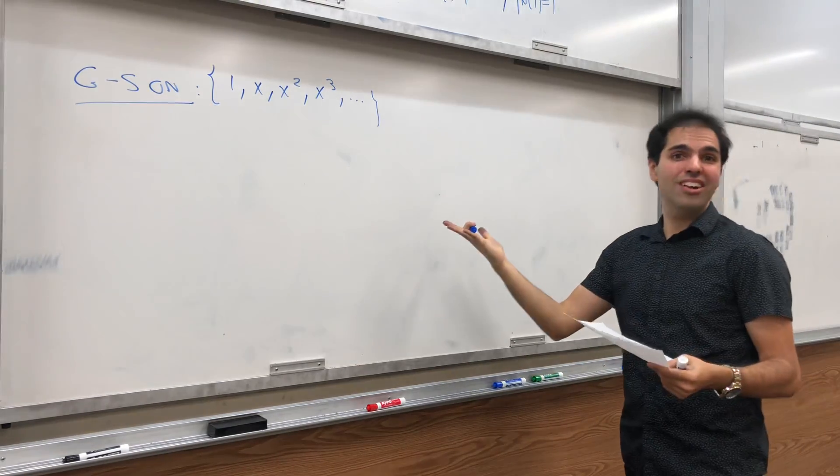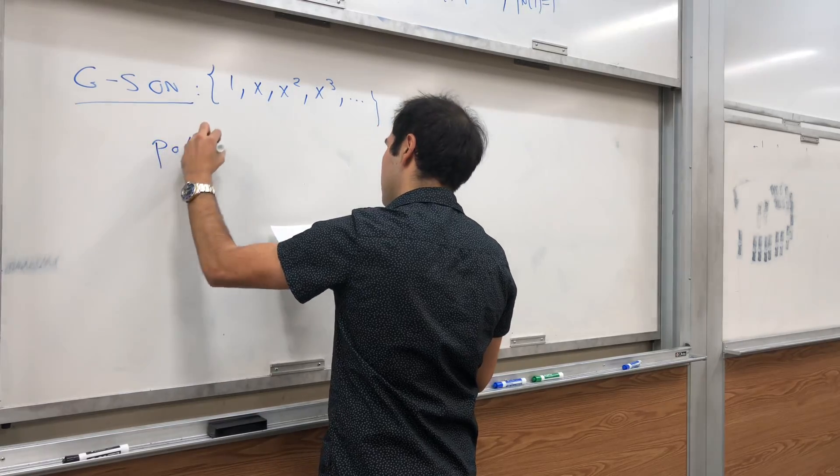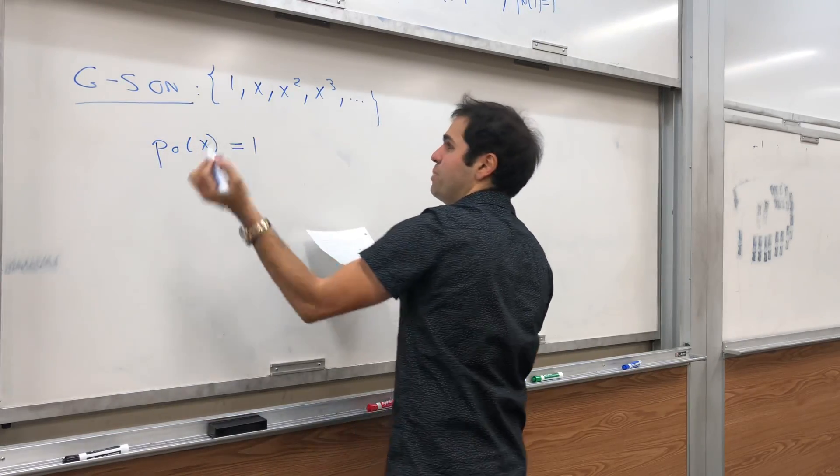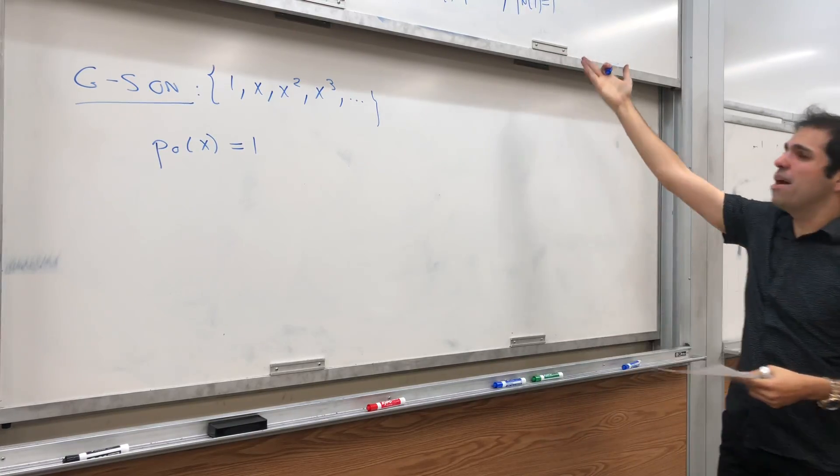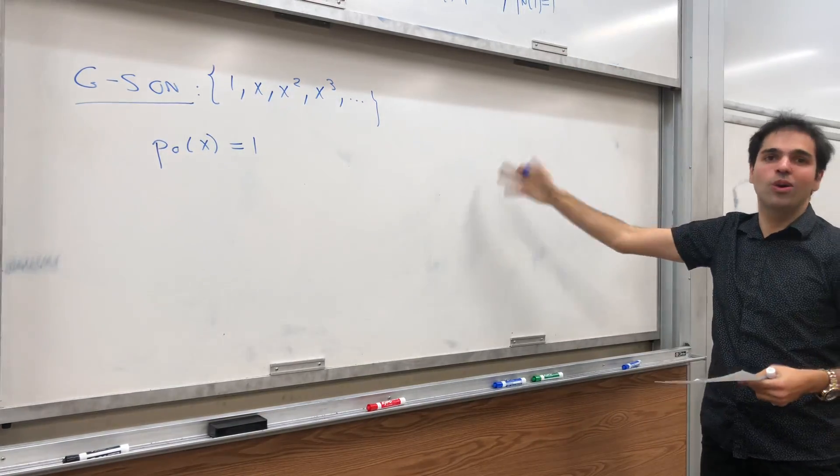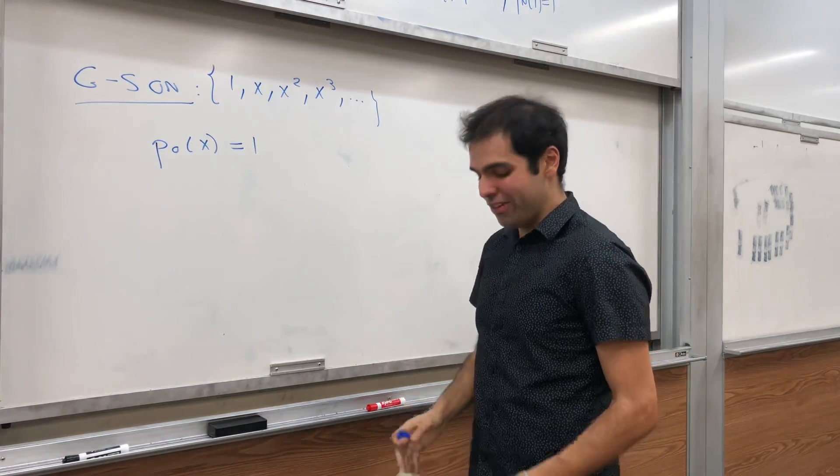Well, we've got to start with something, so let P0 just be 1. We'll just start with one vector, and indeed, P0 at 1 is 1, so that works. 2 wouldn't work, for example.